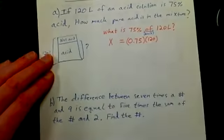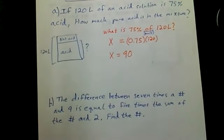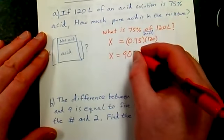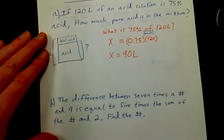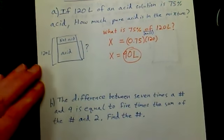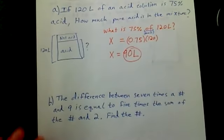So X is equal to 90. Now that's not my final answer. My final answer is 90 liters. That's my answer: how many liters of pure acid? 90 liters. Don't forget to label it.